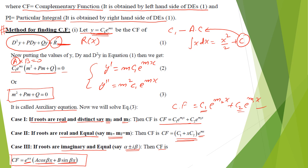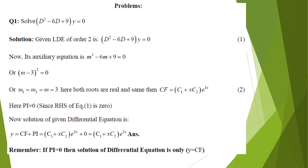Now solving the problem: the differential equation (D² − 6D + 9)y = 0. We form the auxiliary equation m² − 6m + 9 = 0 and find its roots to determine the CF.